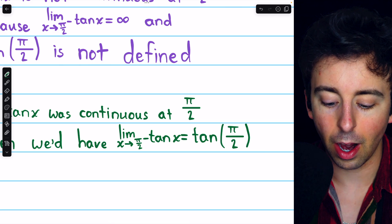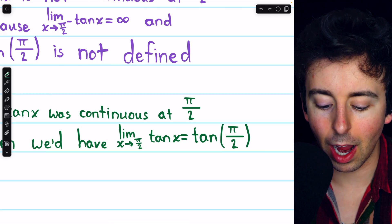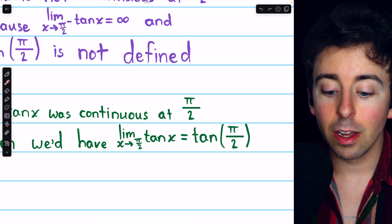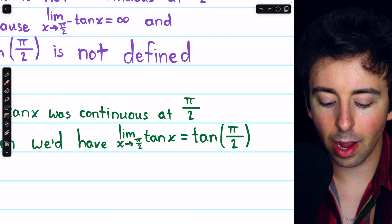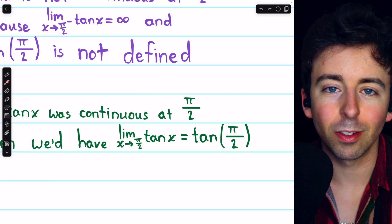But if we're just considering its continuity at pi over 2 in general, we would have to consider the two-sided limit. But again, we certainly don't have this equality, because tangent isn't defined at pi over 2, and the limit does not exist, no matter which direction you approach from.